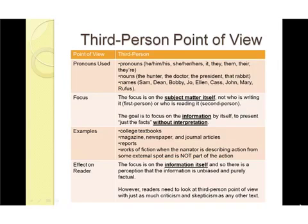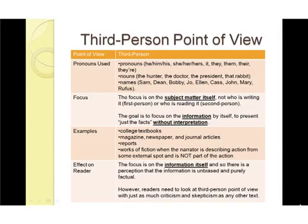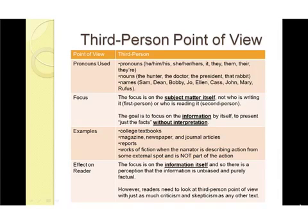Notice that's just a perception — it doesn't automatically mean you're getting just the facts. Examples you'd encounter in college include textbooks, magazines, newspapers, journal articles, and reports. Also works of fiction where the narrator has stepped away from the action and is merely reporting on it — that fly-on-the-wall idea. Just because something is written in third-person doesn't mean it isn't twisted or spun in a particular way. You want to use criticism and skepticism as you would with any other point of view.